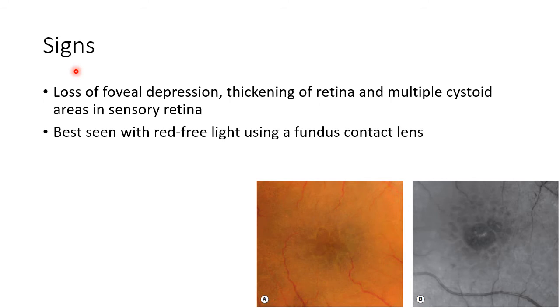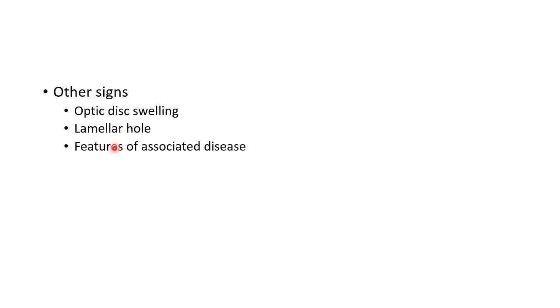Coming to the signs of CMO, fundus examination will show loss of foveal depression, thickening of retina, and multiple cystoid areas in the sensory retina as you can see in this picture. This is best seen with red-free light using a fundus contact lens. Other signs include optic disc swelling, lamellar hole, and the features of associated disease.